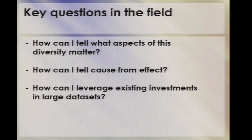How can you tell cause from effect? Which of the differences you see between individuals are causes of, as opposed to consequences of, the phenotypes that they differ in? And a lot of people want to know how they can leverage large existing investments in datasets such as the HMP dataset that have cost millions of dollars and could really complement their studies.